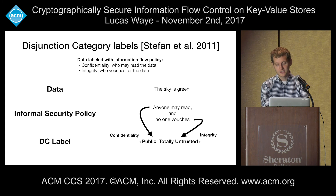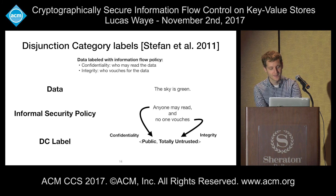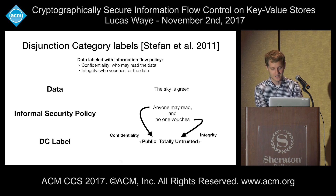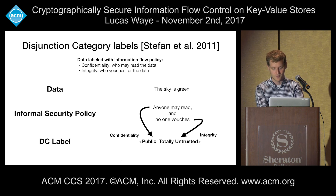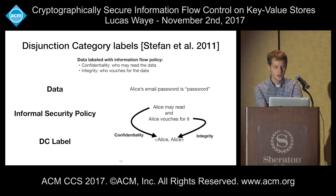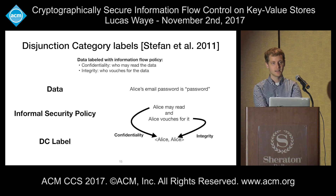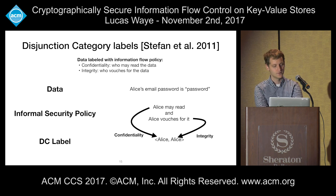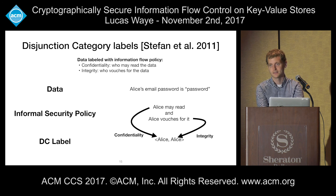For example, if we have a piece of data 'the sky is green' and we're fine with anyone reading it and want to make clear that no one vouches for that data, we can use the DC label public and totally untrusted. The first part of the label is the confidentiality component and the second part is the integrity component. For a piece of data like Alice's email password, if we want only Alice to be able to read it and further that Alice vouches for that data, we can use the DC label Alice, Alice.